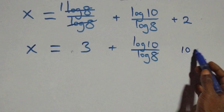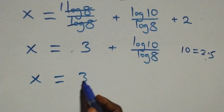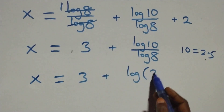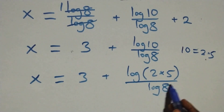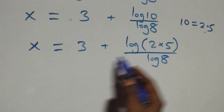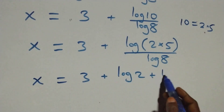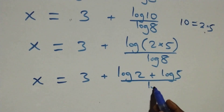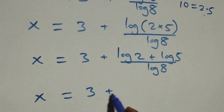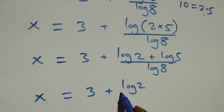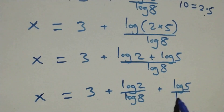Also, 10 can be written as 2 times 5. We apply the log product rule and separate into fractions: x equals 3 plus log 2 over log 8 plus log 5 over log 8.